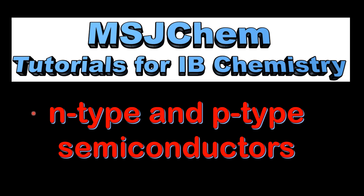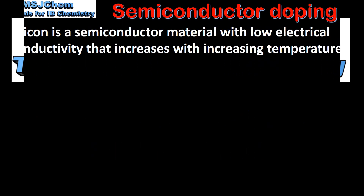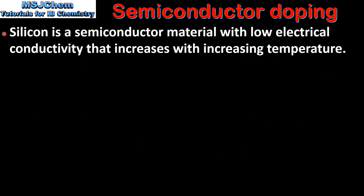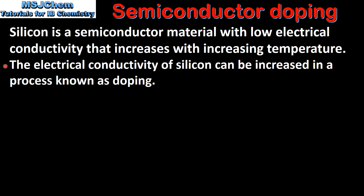This is MSJChem. In this video I'll be looking at N type and P type semiconductors. As we saw in a previous video, silicon is a semiconductor material with low electrical conductivity that increases with increasing temperature. The electrical conductivity of silicon can be increased in a process known as doping.